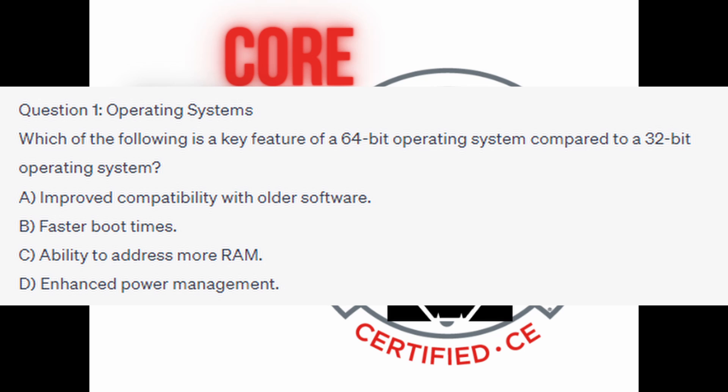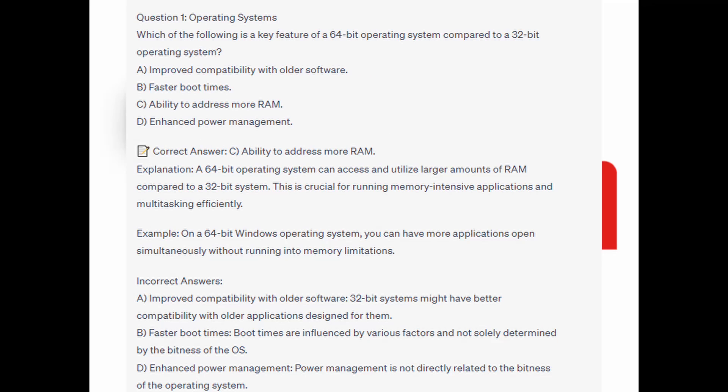You now have 5 seconds. And the quick answer is C: ability to address more RAM. A 64-bit operating system can access and utilize larger amounts of RAM compared to a 32-bit system.